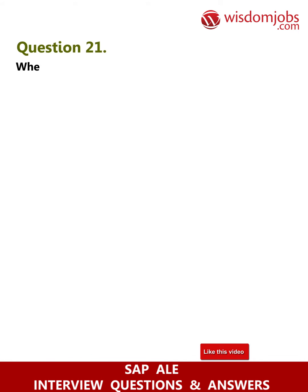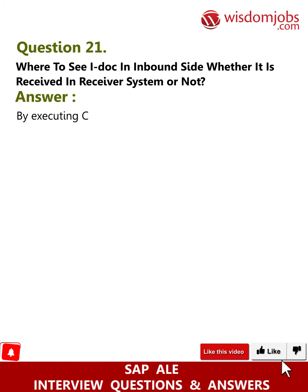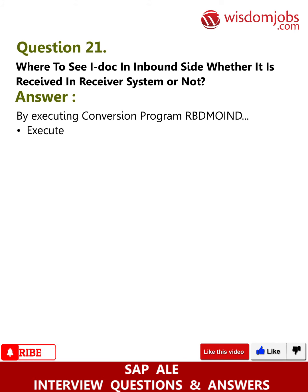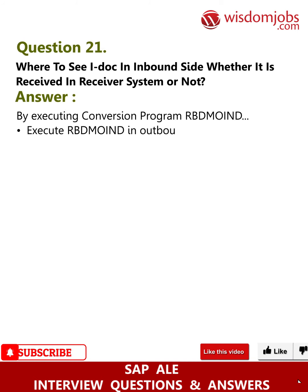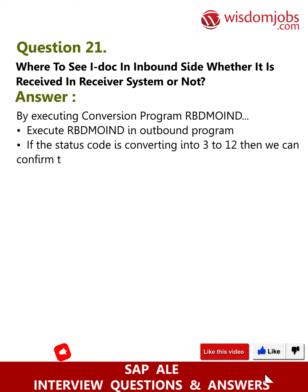Question 21: Where can you see an IDOC on the inbound side to check whether it has been received in the receiver system or not? Answer: By executing the conversion program RBDMOIND. On the outbound program, if the status code is converting from 3 to 12, then we can confirm the IDOC was received successfully.